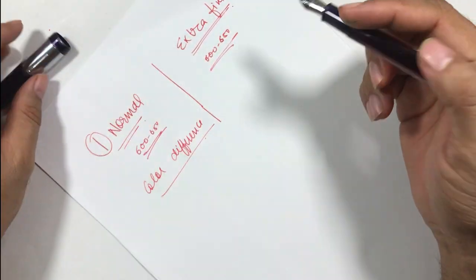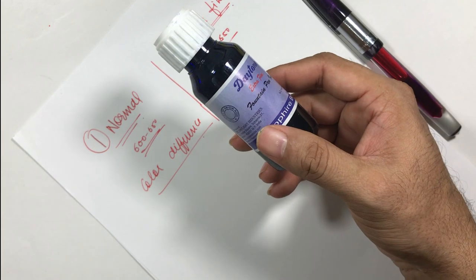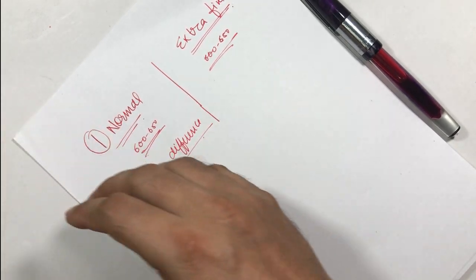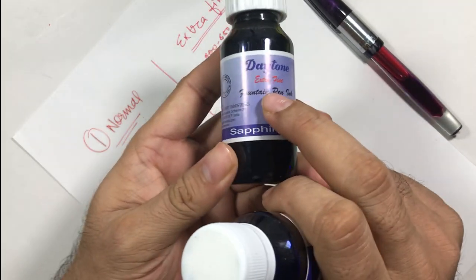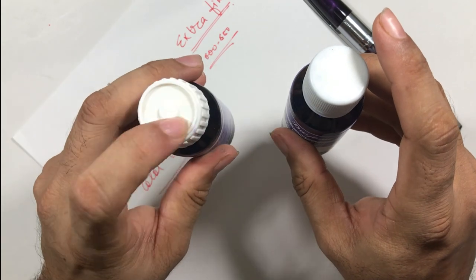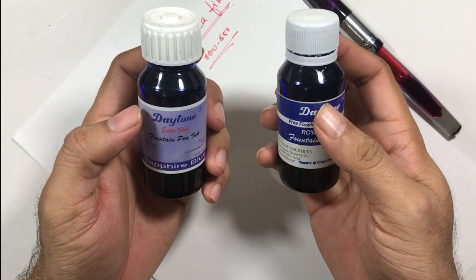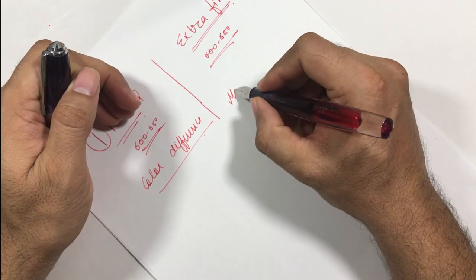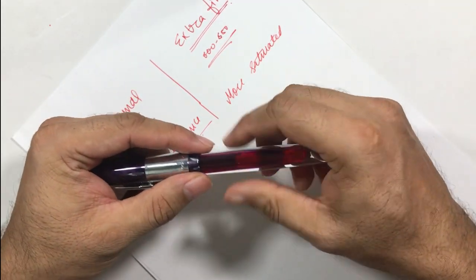In extra fine inks you will get colors like sapphire blue, early on blue, blue scarlet red. If you look at the bottle to identify which one is fine which one is extra fine, the extra fine ones have extra fine written on them and the cap is also different. The extra fine ones come with a cap that has some indentation there. These extra fine inks are more saturated than the normal Dayton inks.